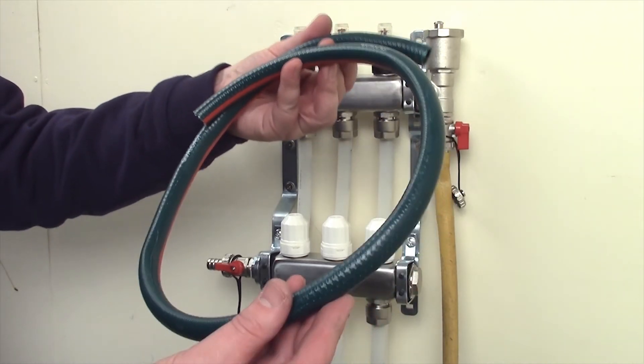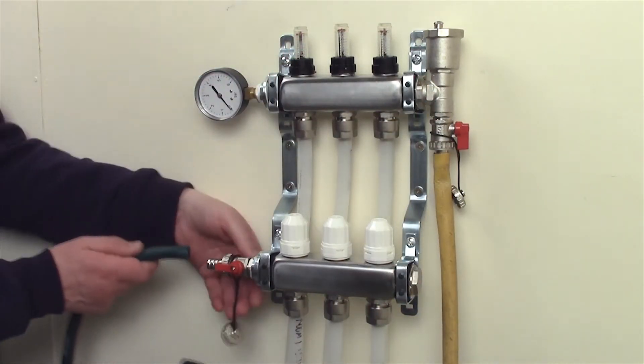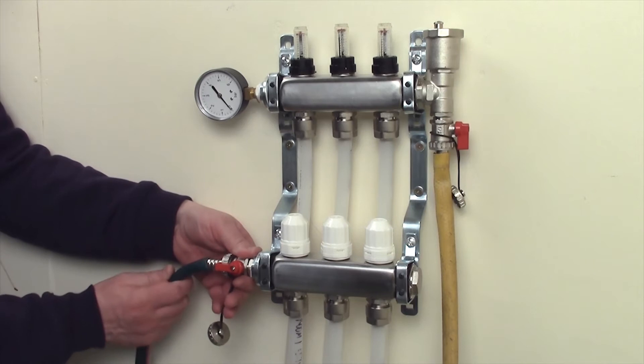Attach a length of hose to the bottom left return bar drain cock. This should be a sufficient length to reach a bucket.